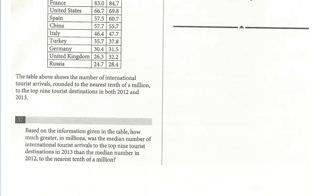Let's take a look at question 37. Based on the information in the table, how much greater in millions was the median number of international tourist arrivals to the top nine tourist destinations in 2013 than the median number in 2012, to the nearest million? We're just looking for the difference in the median from 2013 to 2012. Thankfully, if you look, these are all in order — sometimes they'd be mixed up and you'd have to arrange them, but this one's already in order. 83 going down, this is the lowest. Same with 2013.